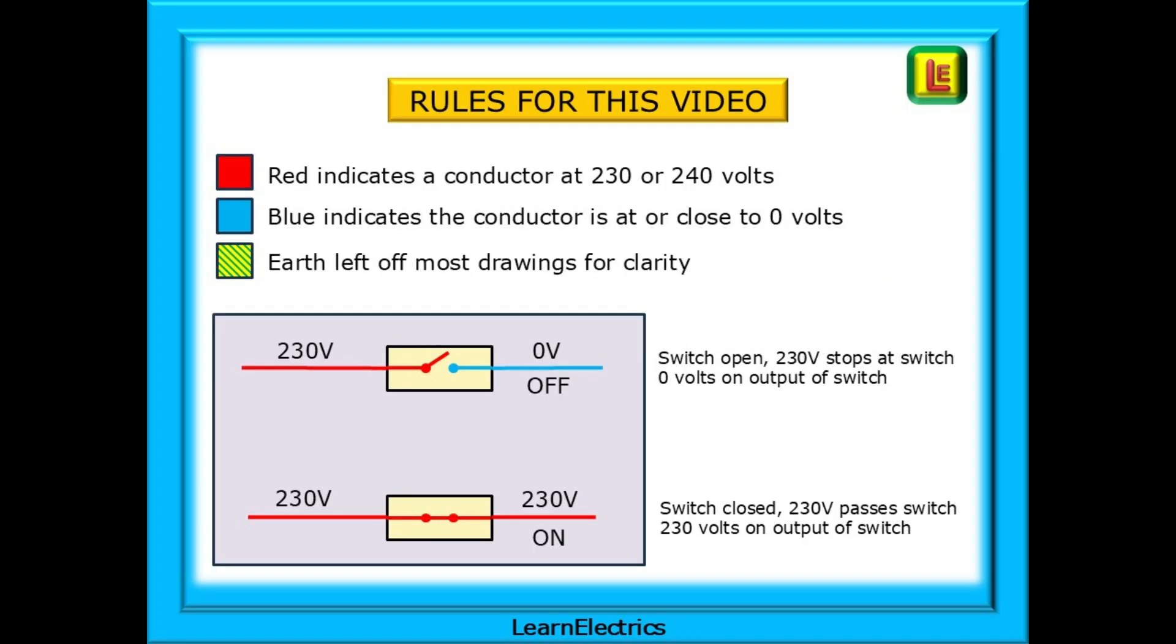A couple of rules that I've used in this video as I've not used conventional conductor colours, brown and blue or red and black for example. Instead, I've changed the colour of the conductor to red if it is 230 or 240 volts and blue for a conductor at 0 volts or ground potential. This way, it's hoped you will be able to see where the danger voltages are in a circuit depending on which switch is turned on or turned off. Red indicates the conductor at 230 volts, probably closer to 240 volts when measured. Blue indicates that the conductor is at or close to 0 volts and the earth is left off most of the drawings for clarity.